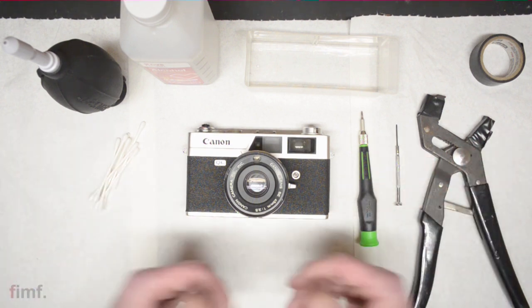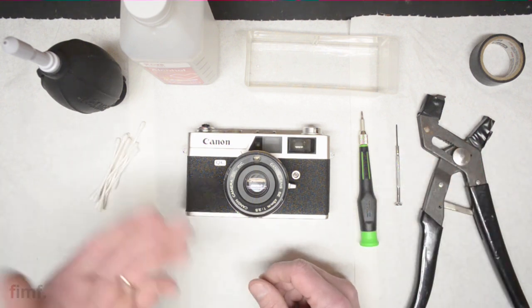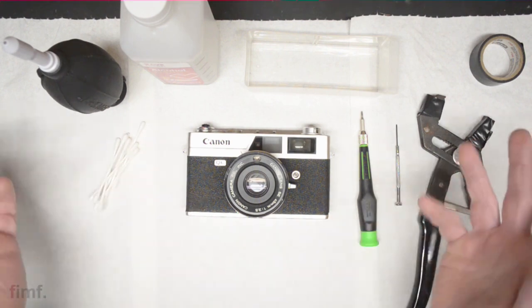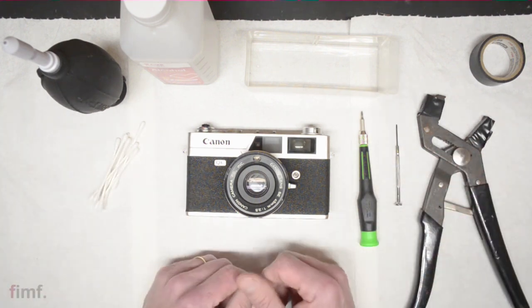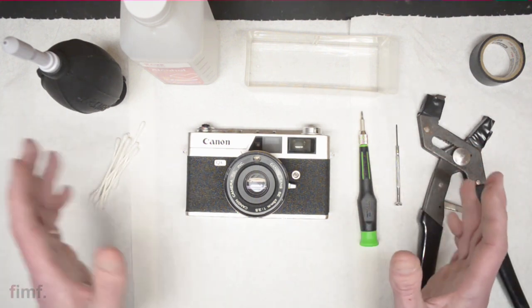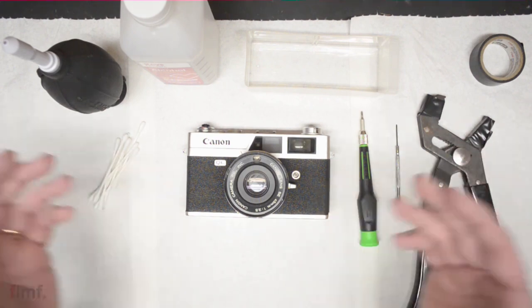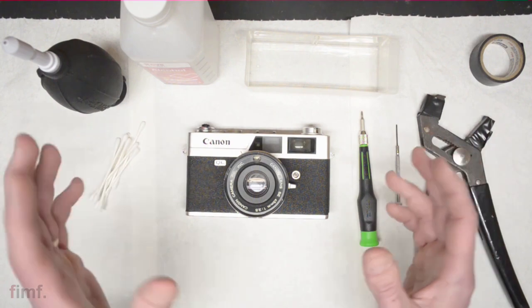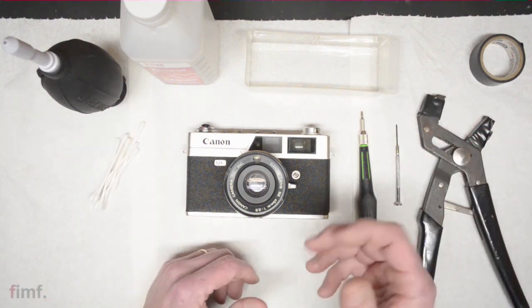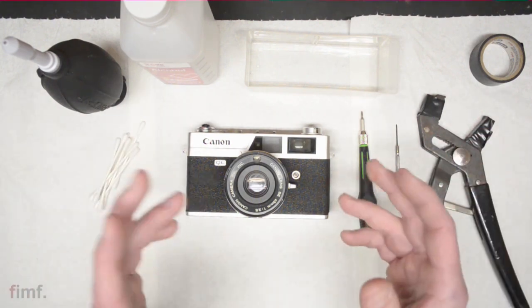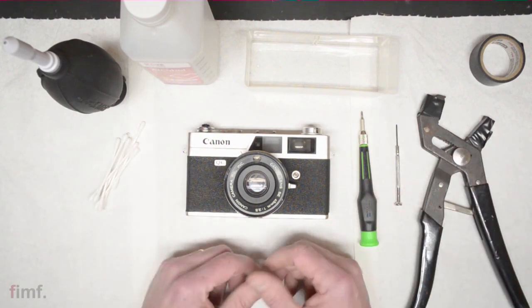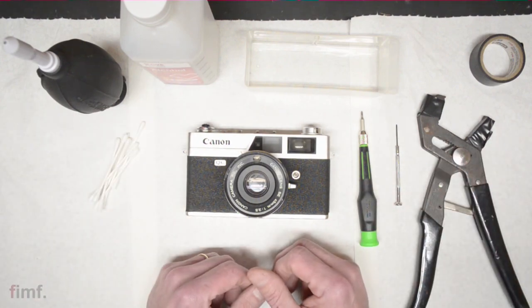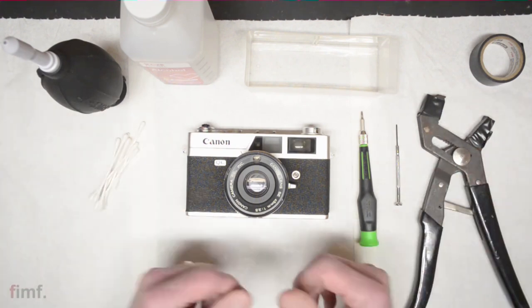I had somebody reach out and ask if I could make a video on this, and since I still had this camera laying around, I thought if it would be helpful, absolutely. It's really simple to do. Honestly, a lot of these late 60s, early 70s rangefinders are all put together the same way. It might have a couple different screws here and there, but this could be applicable to a camera that you have, even if it's not this particular brand.